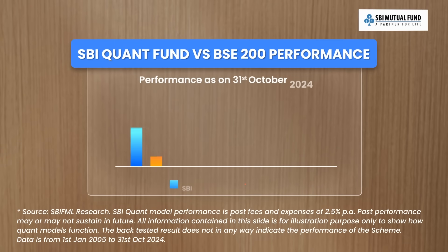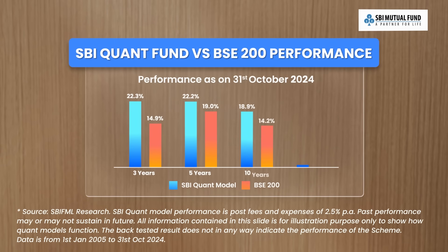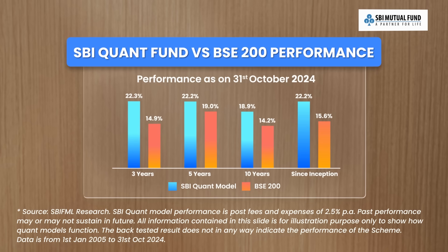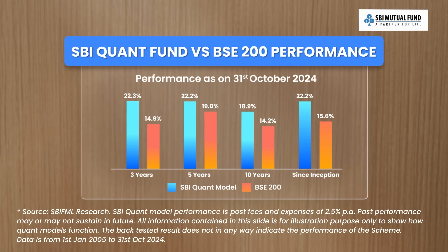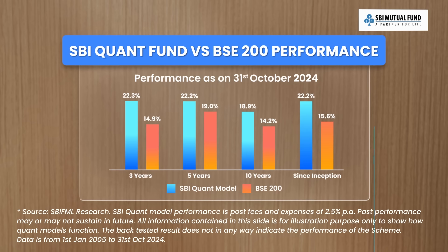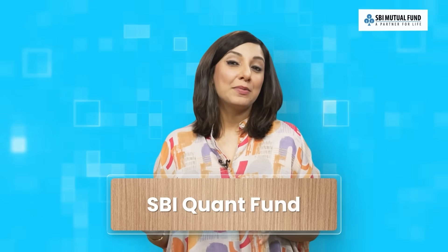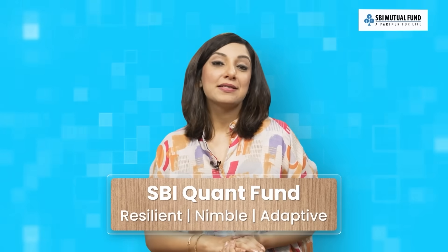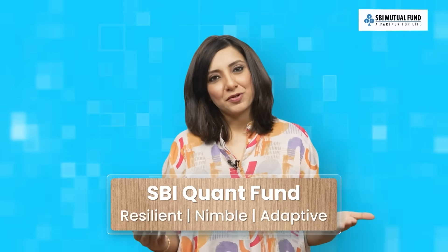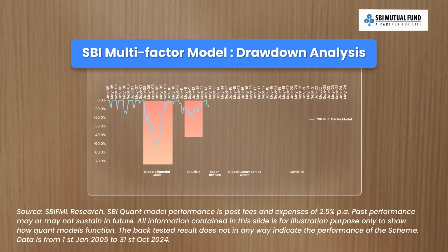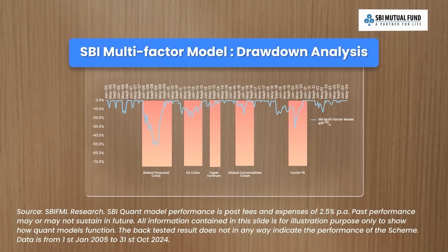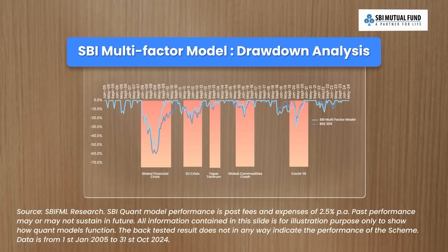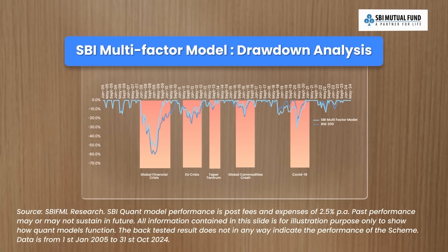Since the fund relies entirely on data, it was possible to backtest the performance of the model. Over three, five, and ten year periods, the model had beaten the BSE 200 index quite handsomely. Comparing it to the BSE 200 since the index's inception in 2005, the outperformance is about 7%. Looking at the worst periods — the drawdowns — the SBI Quant model demonstrates resilience in market downturns and recovers faster than the BSE 200 due to its nimble adaptive strategy. For example, during the 2008 crisis, it contained losses more effectively than the BSE 200, providing investors with a more stable journey through volatility.